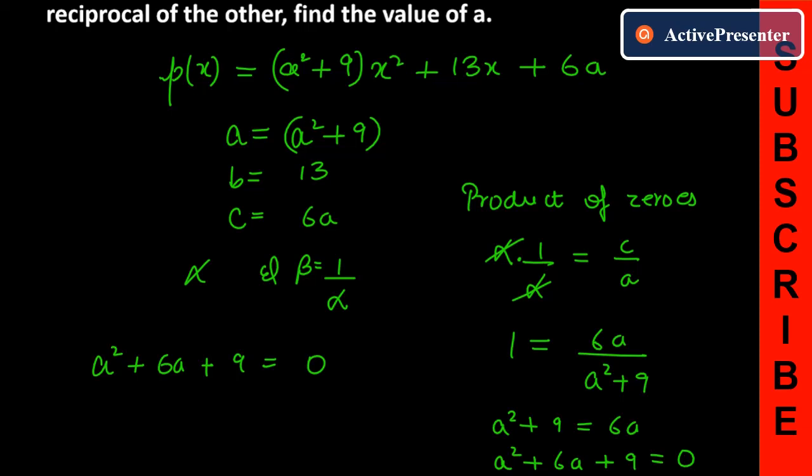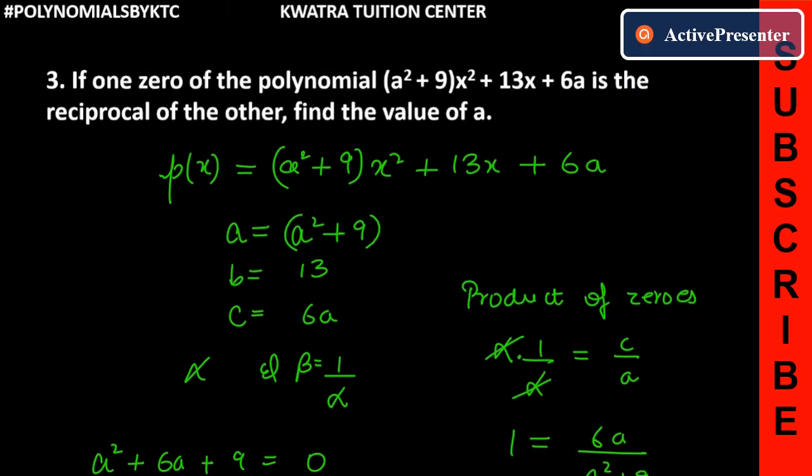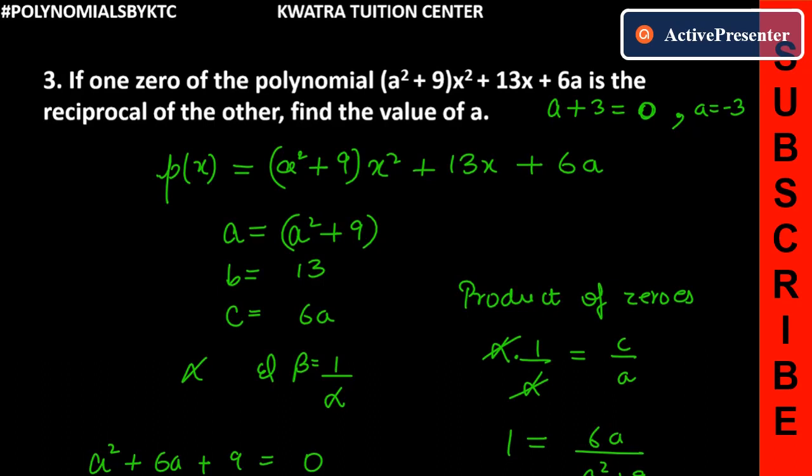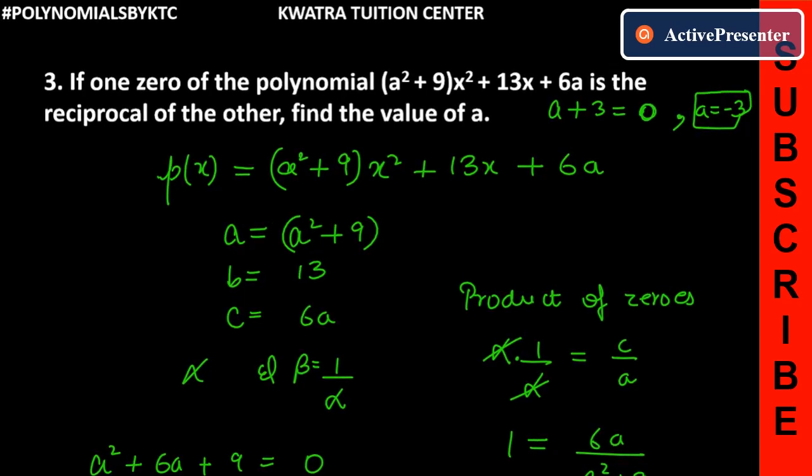You can split 6a as 3a + 3a, so it will be a² - 3a - 3a + 9 = 0. From the first two values we can take out a, giving a(a - 3). From the last two values we can take out -3, giving -3(a - 3). So we get (a - 3)(a - 3) = 0, which means a - 3 = 0, so a = 3.